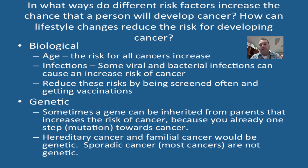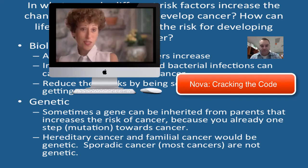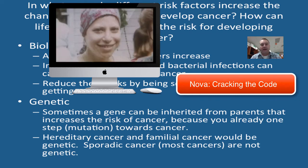We learned about the BRCA1 and BRCA2 genes — those are your major breast cancer genes that lead to the familial types. If you remember the 'Cracking the Code' NOVA video, we talked about those three sisters where one of them died from cancer, another carries the BRCA1 gene, and the other sister did not have it.